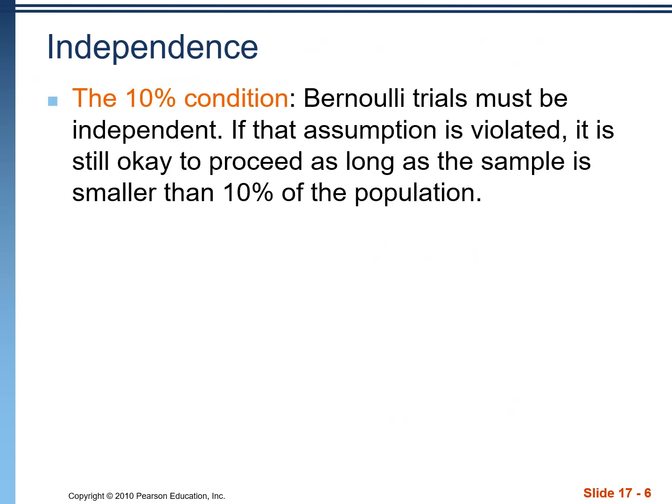One other thing to mention before we get into an actual example, is that one of the criteria for Bernoulli trials is that all these trials are independent. And in reality, that's not actually the case. If we're picking people from the population and we're not putting them back where we can choose them again, those aren't actually independent trials.